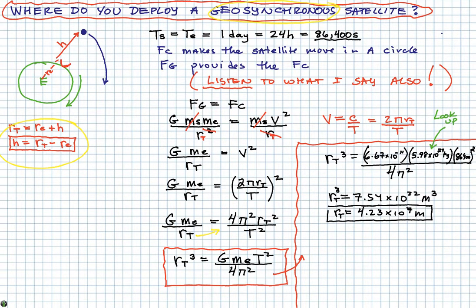Okay, we're not done because I know that h is equal to r_t minus r_e. So that'll be 4.23 times 10 to the 7 meters minus the radius of the earth, and I need to look that up again, and that's 6.38 times 10 to the 6 meters. So h is going to be equal to 3.6 times 10 to the 7 meters.